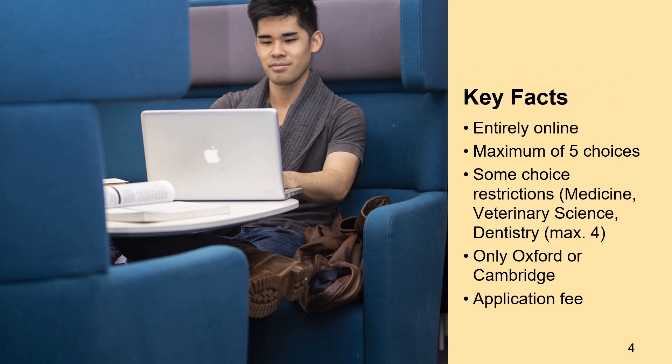Some key facts about the application process: it is entirely online on UCAS and you can go onto their website and create an account. You get a maximum of five choices of university. There are some choice restrictions — if you want to study medicine, veterinary science or dentistry you can only choose four. If you wish to apply to Oxford or Cambridge you can only apply to one of these. There is a small application fee, which you can check on the UCAS website.